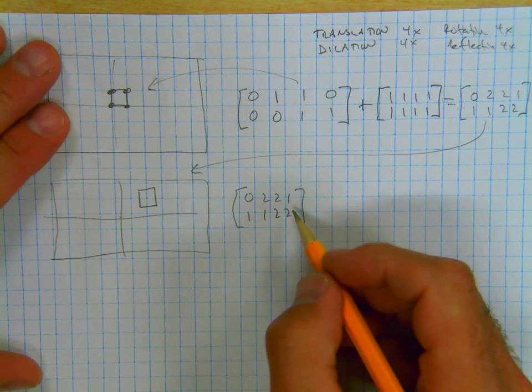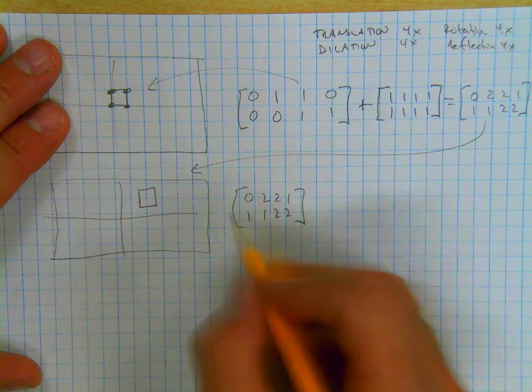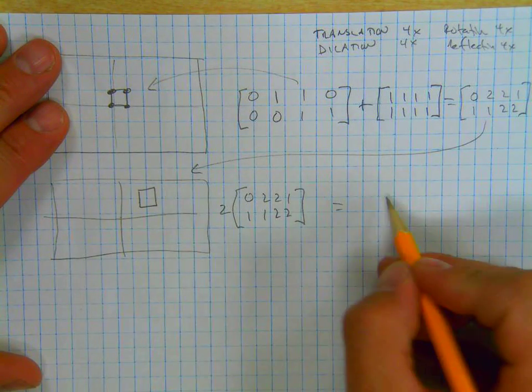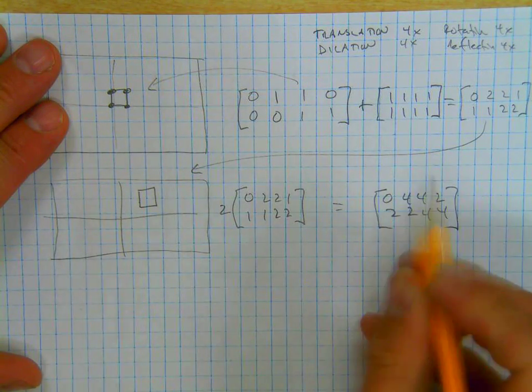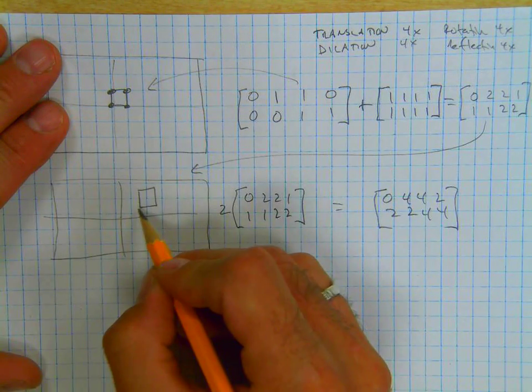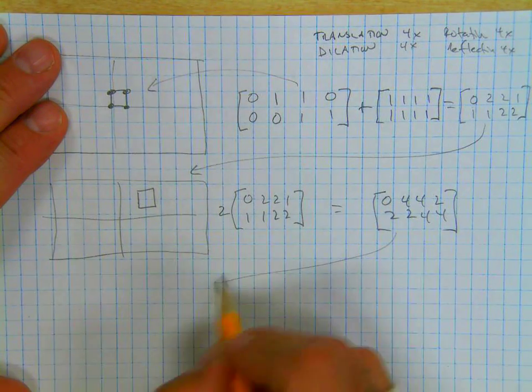So now you're going to take this and maybe you're going to dilate it. So you multiply it by 2. And it's 0, 4, 4, 2, 2, 2, 2, 4, 4. And you're going to graph that in the next slide.